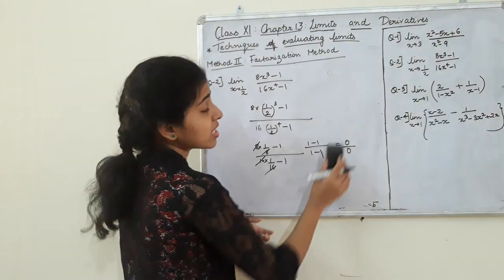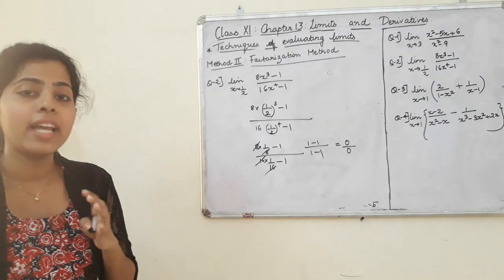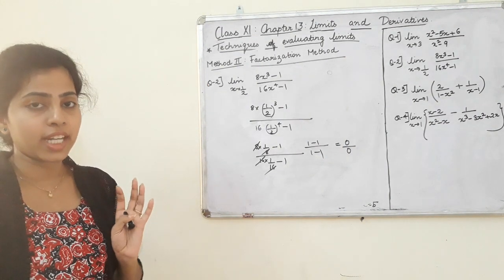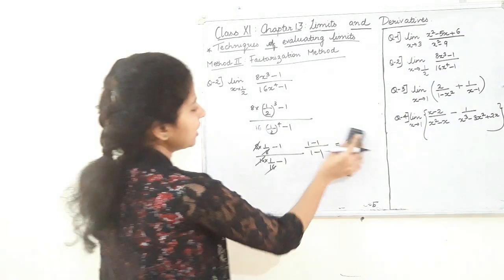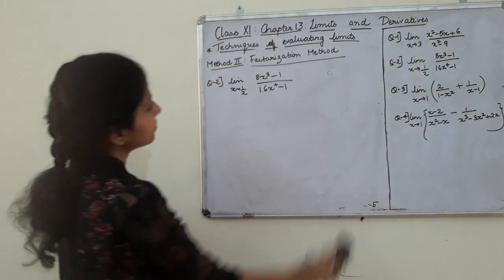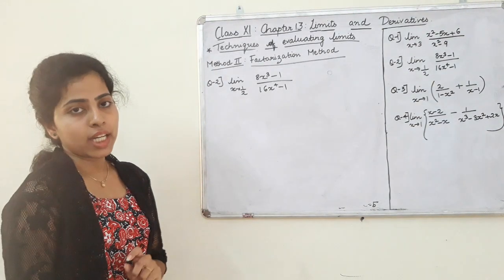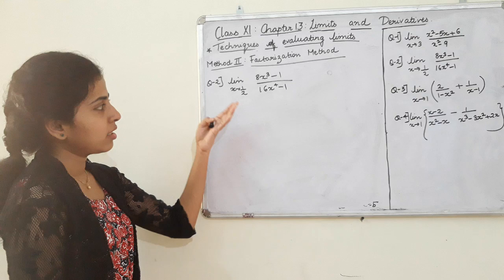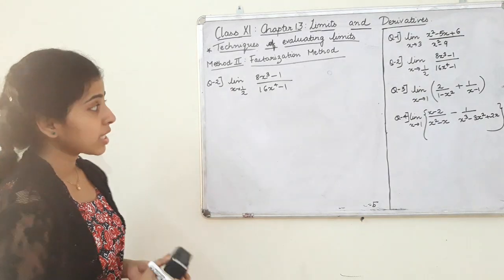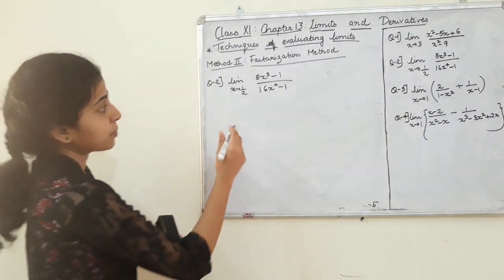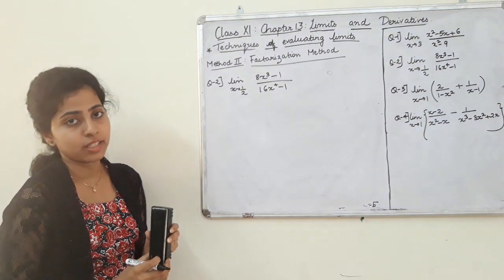Since we get 0/0, we know 0 is a factor — we need to find and cancel it. This is not just a quadratic equation; we need to apply algebraic formulas to find the factors.